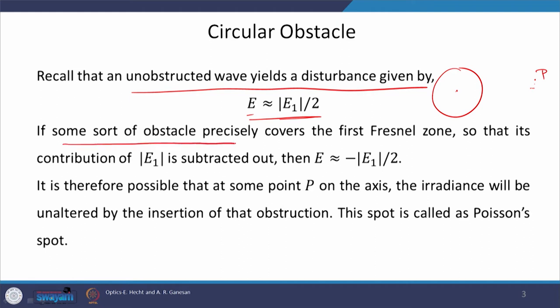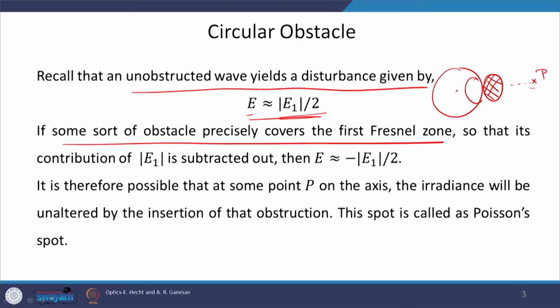Now if some obstacle precisely covers the first Fresnel zone, then what will happen? Suppose this is our first Fresnel zone. If we cover it with a disc that covers exactly the first Fresnel zone, then what would be the disturbance at point of observation P? Since the obstacle is exactly covering the first Fresnel zone, the contribution from the first Fresnel zone would be deducted. That contribution is E₁, therefore we subtract E₁ from mod of E₁ by 2, and we get mod of E₁ by 2 with a minus sign.